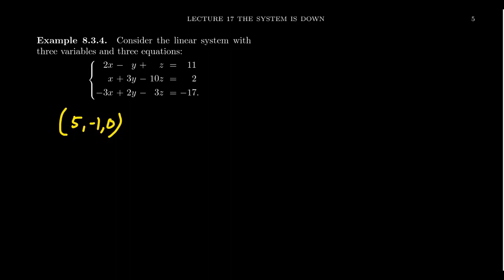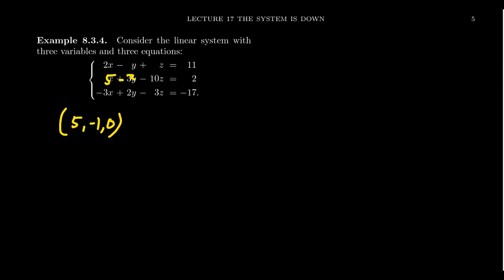A real authentic solution here is (5, negative 1, 0). Checking the first equation: 2 times 5 is 10, then negative negative 1 is plus 1, then 0, giving 11. For the second equation: 5 plus 3 times negative 1 is negative 3, and then 0, so 5 minus 3 equals 2. For the third equation: plugging in 5 for x gives negative 15, minus 2, then 0 again — that's negative 17. So (5, negative 1, 0) is indeed a solution.